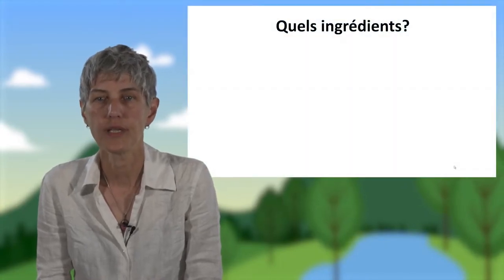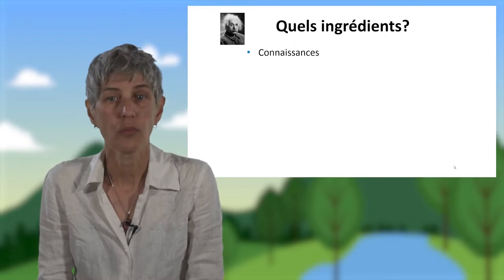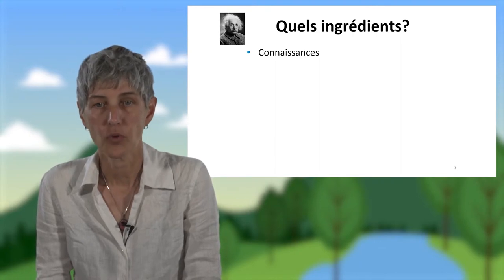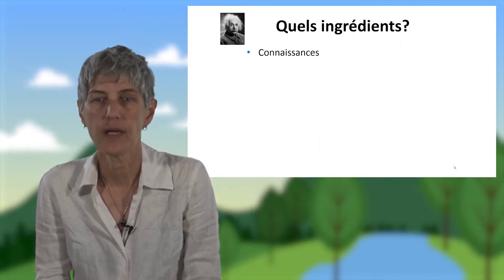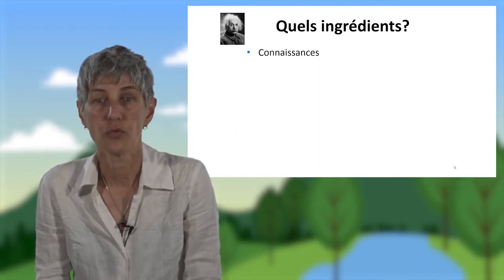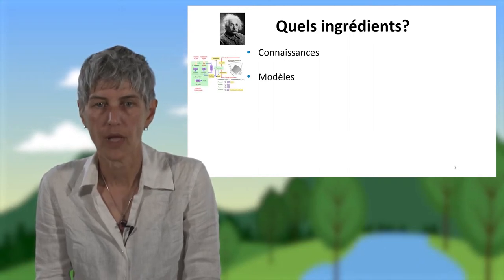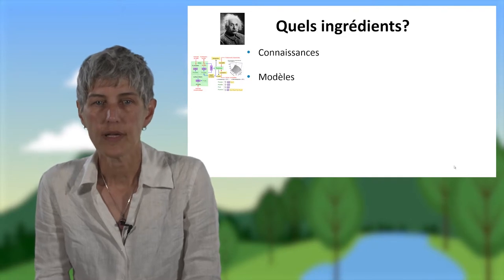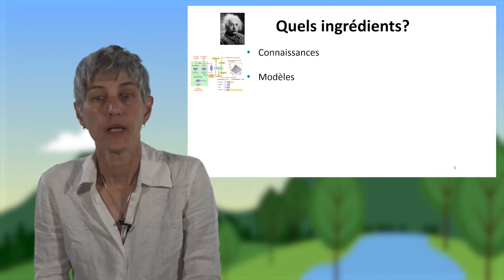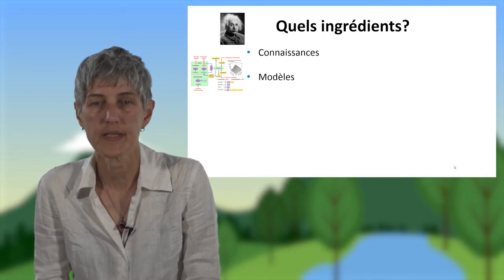Quels ingrédients pour l'ingénierie agroécologique ? Elle a besoin de connaissances sur les composants biologiques et biophysiques des agroécosystèmes, sur les processus et sur la façon dont les pratiques culturales influencent ces composants et ces processus. Par exemple, on a besoin de connaissances sur le fonctionnement des cultures associées et la façon dont elles utilisent les ressources. Elle a besoin aussi de modèles qui représentent ces composants, ces processus et l'effet des pratiques culturales, et qui permettent de tester des hypothèses ou bien de tester des scénarios — qu'est-ce qui se passerait si ?